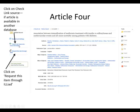Over here in the right-hand column, it says 'check link source for more information.' Sometimes the article might be held in another database, and if you click on that it will show you which database and bring it up for you. But more than likely, you're going to click on the option that says 'request this item through ILLiad.'